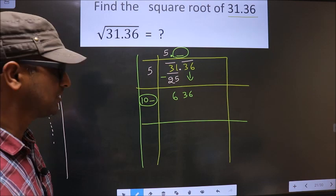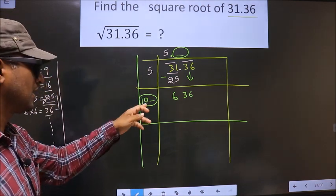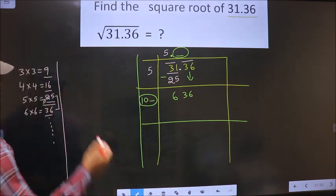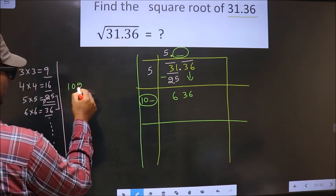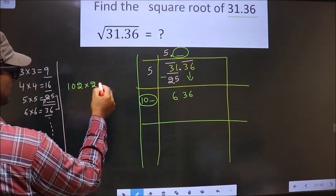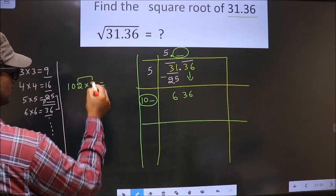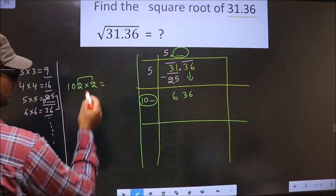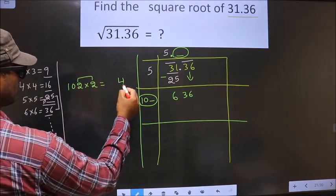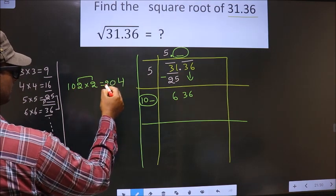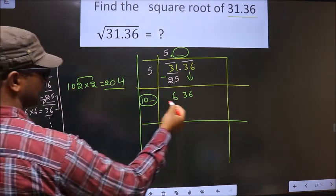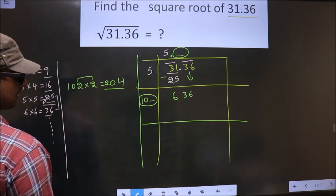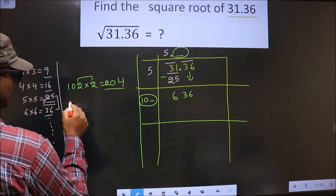So let us find the number. If we take 2, we should also multiply by 2 because these two numbers should be the same. So 2 into 2 is 4, 2 into 0 is 0, 2 into 1 is 2. This is far away from 636, so let us try with 6.